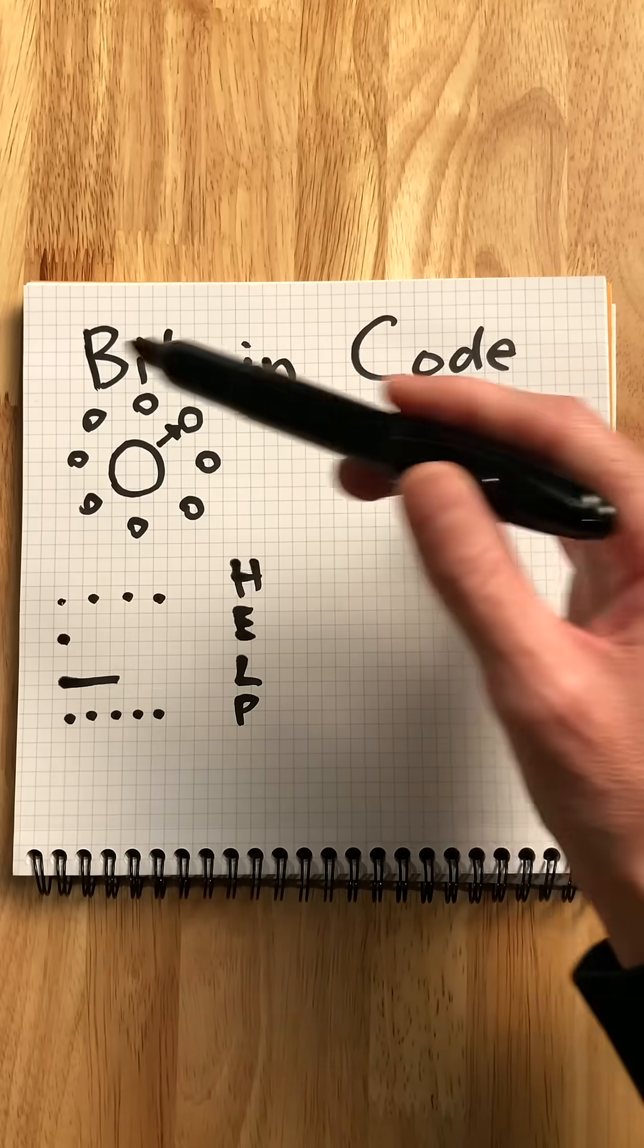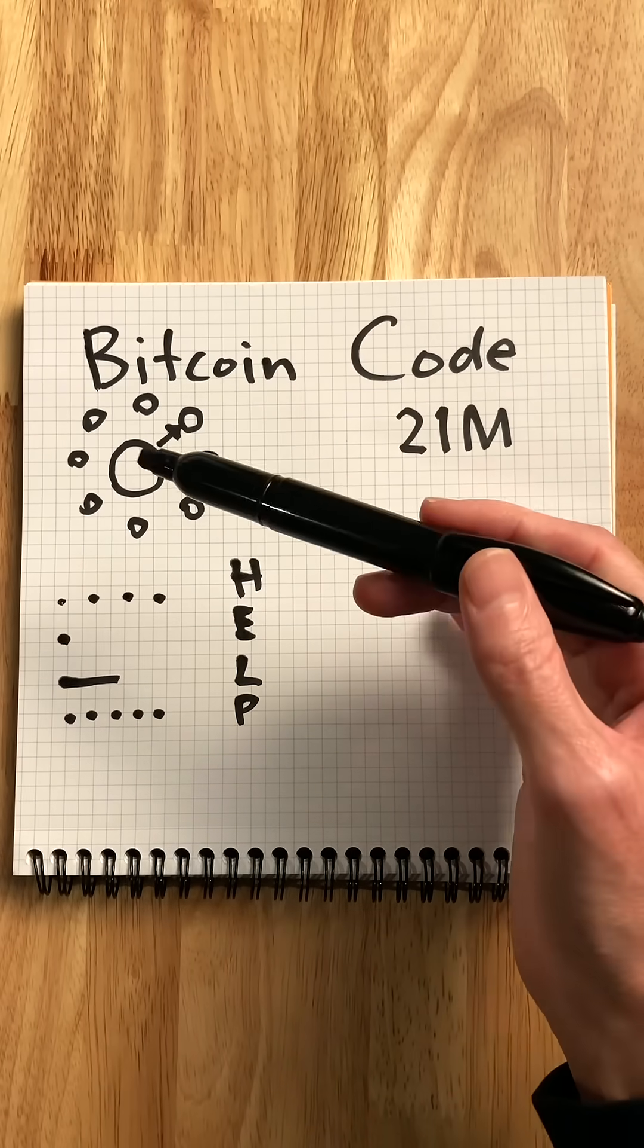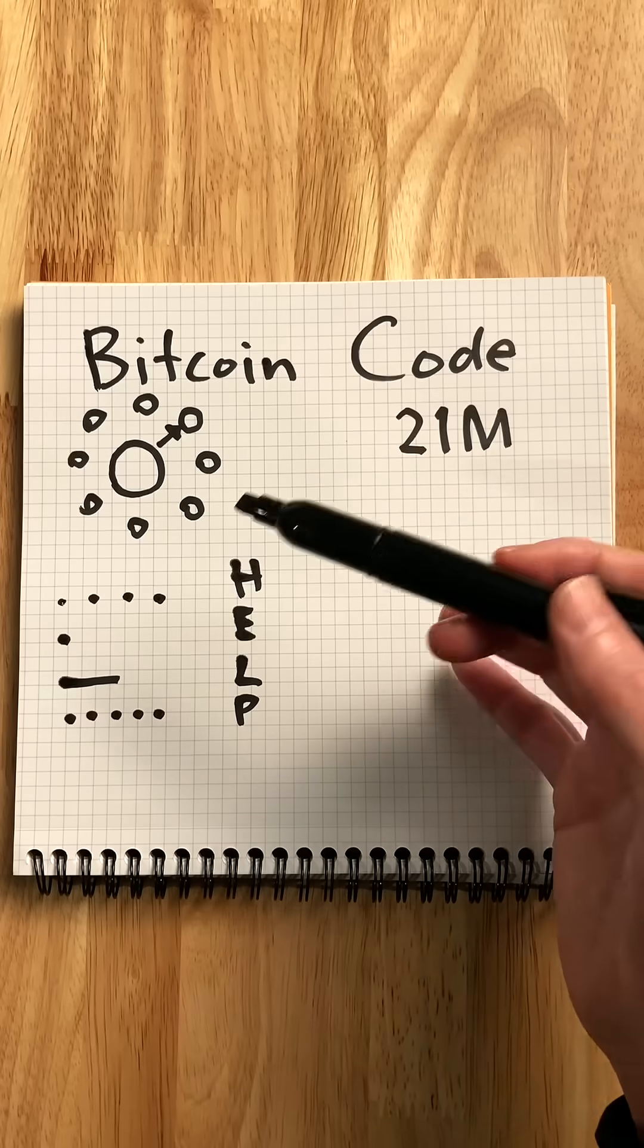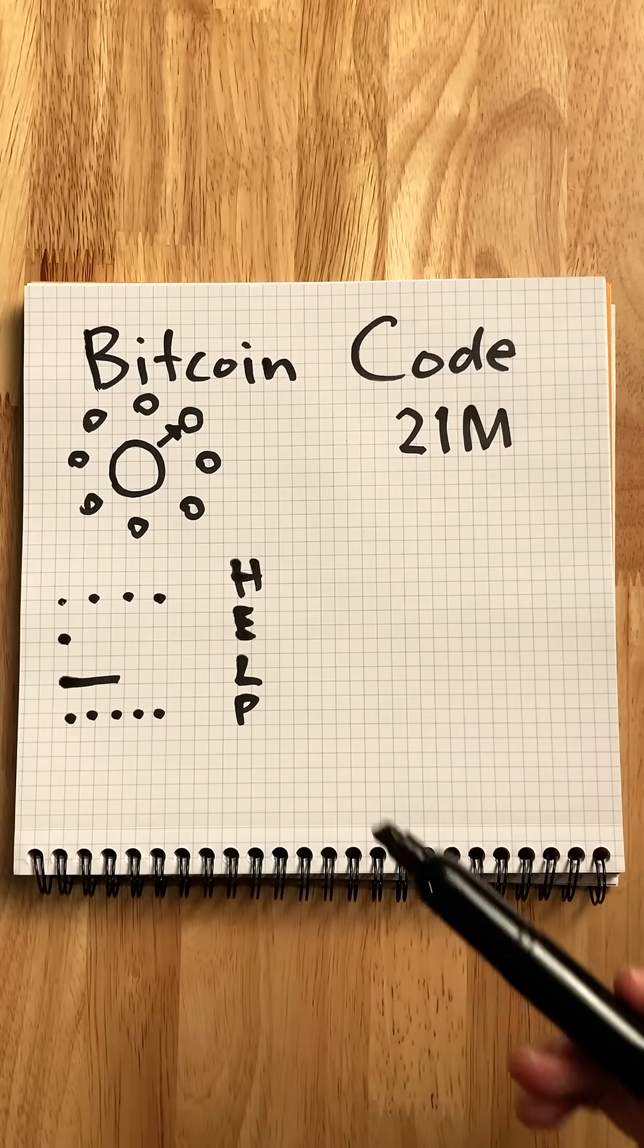Like any language, Bitcoin becomes exponentially more useful and valuable as its network expands. And that's Bitcoin code, put simply.